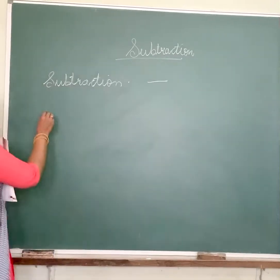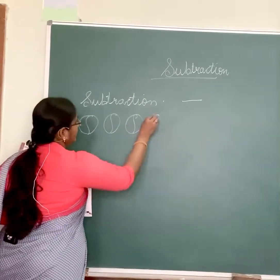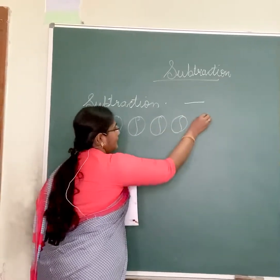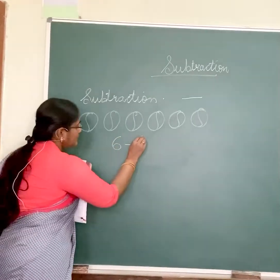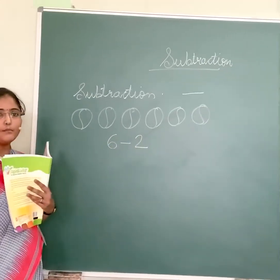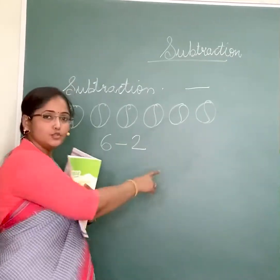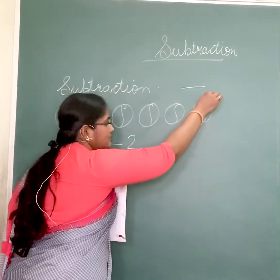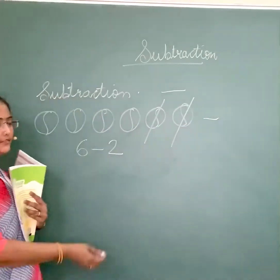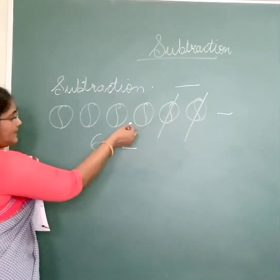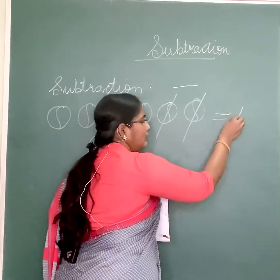Let's count how many objects are there: 1, 2, 3, 4, 5, 6. Now, 6 minus 2. 6 minus 2 means we have to take away 2 from 6. Let's count how many are remaining: 1, 2, 3, 4. And here is the answer: 4.